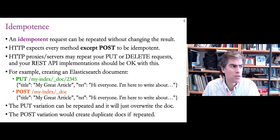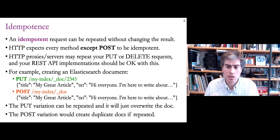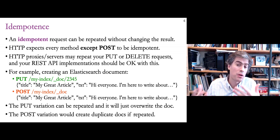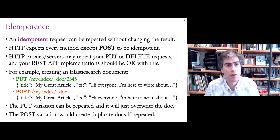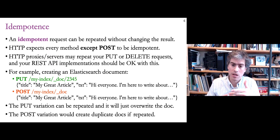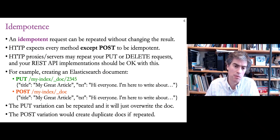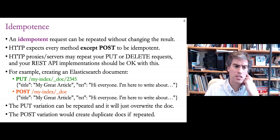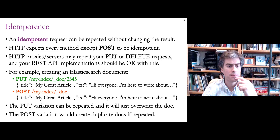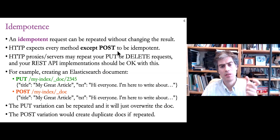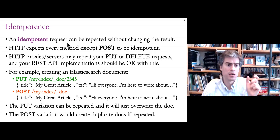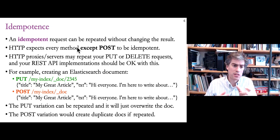When designing REST APIs, you have to define where inputs go and where outputs go — the actions that are possible, the inputs, and the outputs. The one concept in REST that's a little tricky is idempotence. REST uses HTTP, and the HTTP protocol has certain rules about what different methods can do — those rules relate to idempotence. An idempotent request is one that can be repeated without changing the results. This concept is built into HTTP because of the built-in support for proxying and caching.